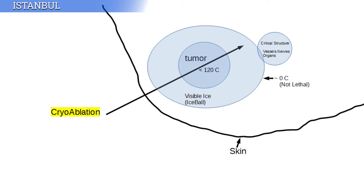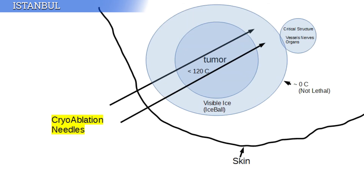If our tumor is bigger, we can insert more than one — maybe two or three needles at the same time. We produce ice balls again around the tumor, and we can grow the ice ball by using more needles. We can treat very large tumors by using more than two or three cryoablation needles.